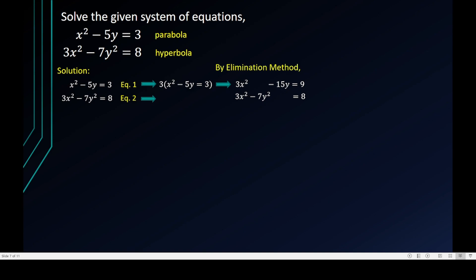Now I subtract the two equations. 3x squared minus 3x squared gives zero, eliminating x squared. Zero minus negative 7y squared gives positive 7y squared. Negative 15y minus zero gives negative 15y. And 9 minus 8 equals 1. So the resulting equation is 7y squared minus 15y equals 1, or in general form: 7y squared minus 15y minus 1 equals 0.